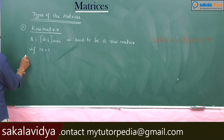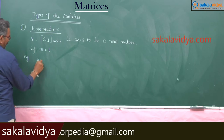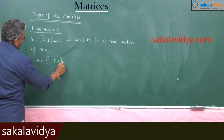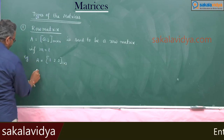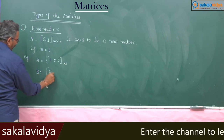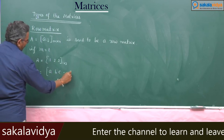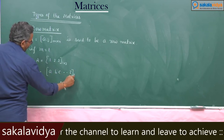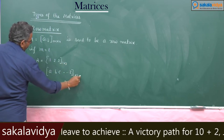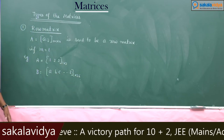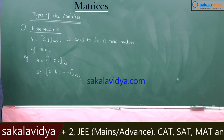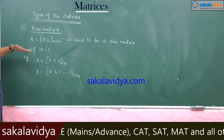Example: A = [1, 2, 3], this is 1 by 3. Suppose B = [A, B, C, ..., Z], this is 1 row and 26 columns, so 1 by 26. That means the order of the row matrix is 1 by n.